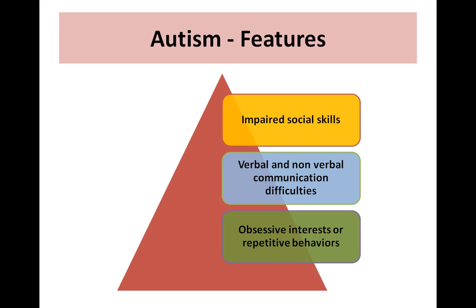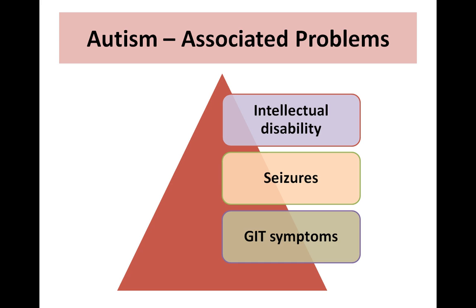We'll start with autism. The main features of autism include impaired social skills, verbal and non-verbal communication difficulties, obsessive interests, and repetitive behaviors. In addition to autistic features, there might be other associated problems like intellectual disability, seizures, and gastrointestinal symptoms.